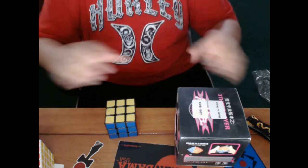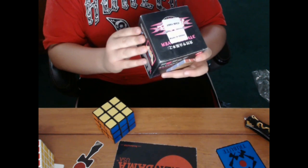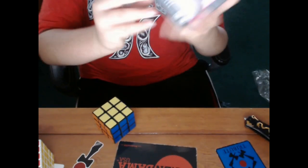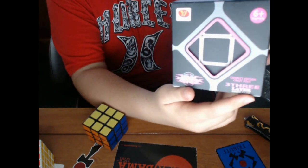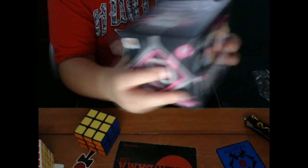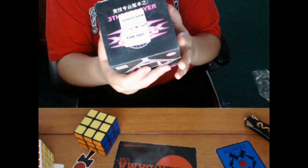Let's take a look at this box. It says three layer magic cube right here and YJ up here, ages six and up.